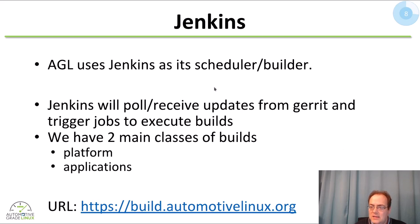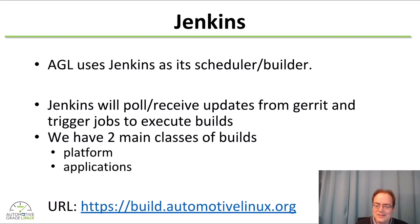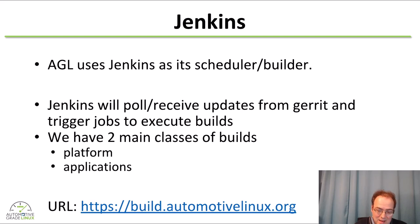Our Jenkins is the build scheduler and CI builder — it will retrieve updates from Gerrit and trigger jobs. We have two main categories: one is a platform build which builds full images, and one is an application-type build which only builds a single application, which is faster. To give you an idea, a full image build would take four hours from scratch. If it's using the cache, we're down to 45 minutes to an hour depending on the speed of the builder. The best time was around 30 minutes, but it depends on the size of the image.